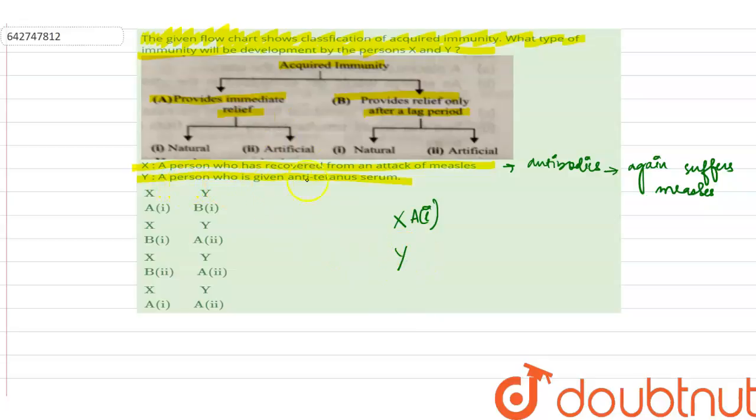Person Y is given anti-tetanus serum. Anti-tetanus serum is injected to our body and it is artificial. The antibody is directly sent into the body. It is artificial.